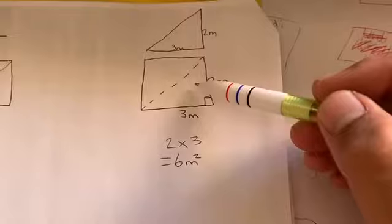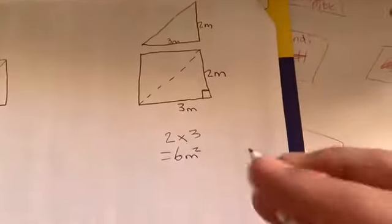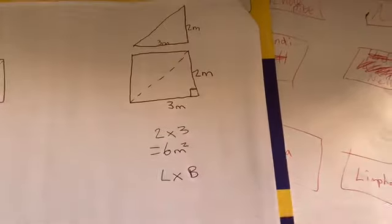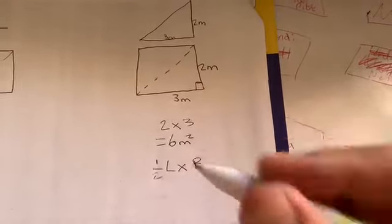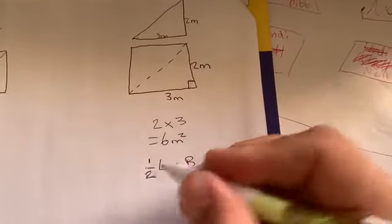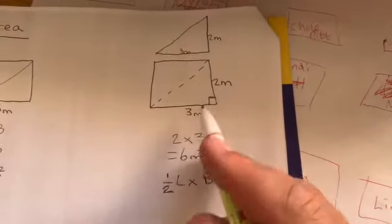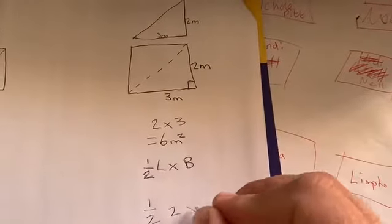But remember, if I want to work out what that triangle is, the triangle is only half the size of that full rectangle. So the actual equation you should be doing is not length times breadth, we need to halve it. So we say it's half length times breadth.